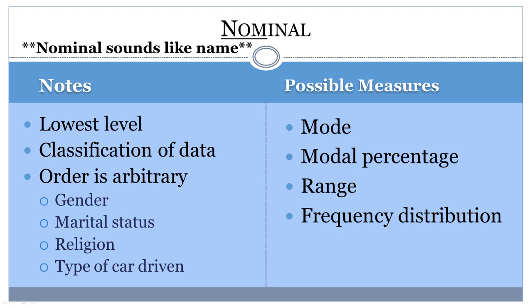Many other statistical tests just do not make sense for nominal data. For example, since there is no natural way to order nominal data, you cannot find a median or middle number. Likewise, you cannot calculate a mean gender since no numerical value for the data exists.